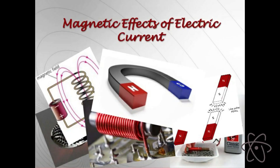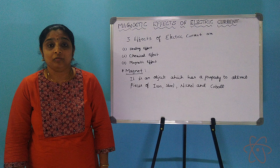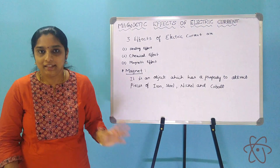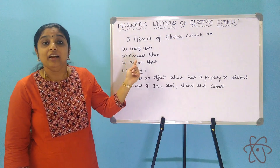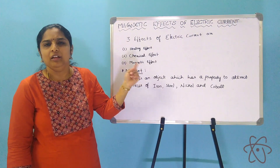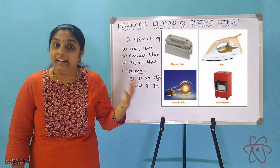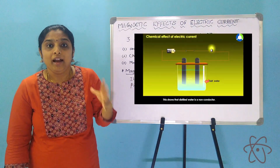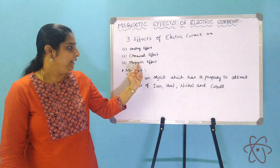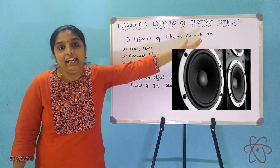Hello students, welcome to a new video of Vignan Guru. In this video we are going to learn about the third chapter of Physics for 10th standard CBSE, which is Magnetic Effects of Electric Current. You already know from your previous classes that there are three effects of electric current: heating effect, chemical effect, and magnetic effect. Heating effect was covered in the last session on electricity, and chemical effect is nothing but electrolysis. Now in this lesson we are going to learn about magnetic effects.